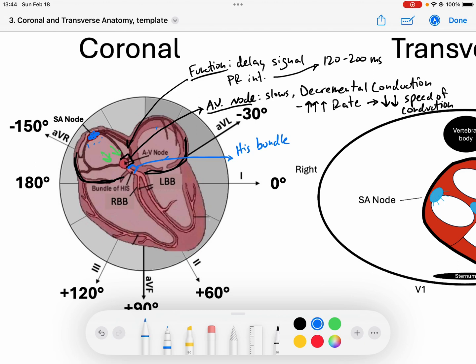Now, the His bundle doesn't do that. The His bundle actually has something called all or nothing conduction. So that means it doesn't matter how fast you stimulate the His bundle, it is going to conduct or it's not going to conduct. Meaning it's going to conduct it rapidly like it normally does, or it's not going to conduct it at all. And that's actually going to help a lot when we talk about these AV node blocks.